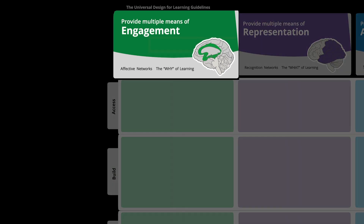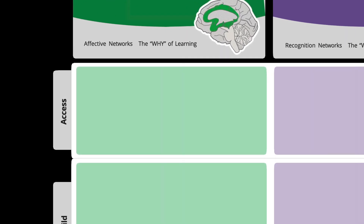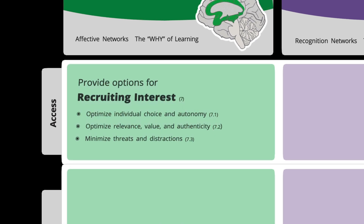Beginning with providing multiple means of engaging students, VoiceThread seems like it was literally built to solve this one checkpoint because it hits all of these points directly. Offering students the option to use VoiceThread for a project — whether it's building a presentation, leading a discussion with peers, creating a portfolio of work, or engaging an outside expert to get feedback — sends a very strong message about students' individual choices and autonomy being respected. By giving them that flexibility, you ensure that they themselves will find the work relevant, valuable, and authentic.